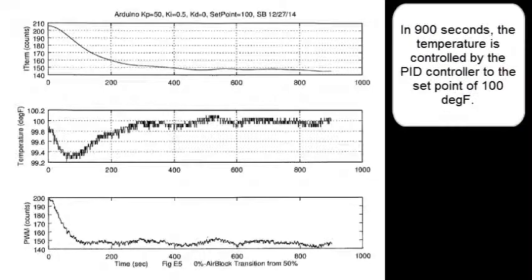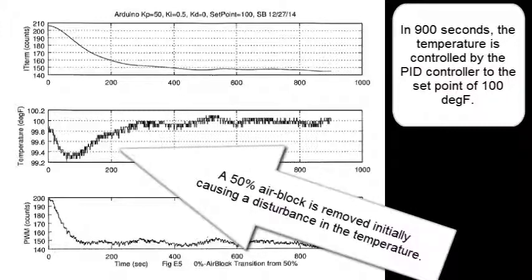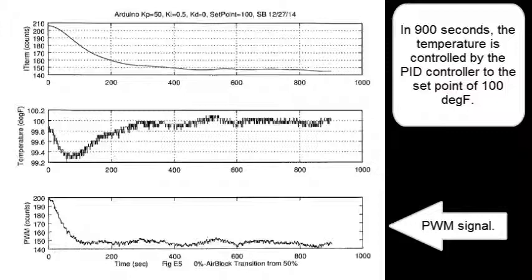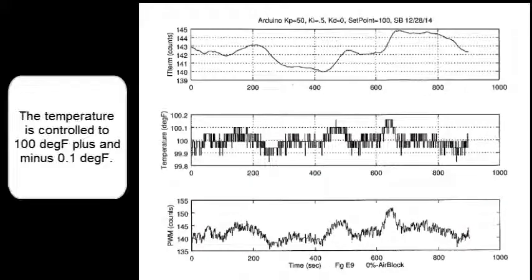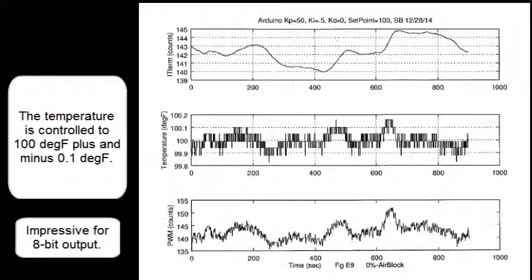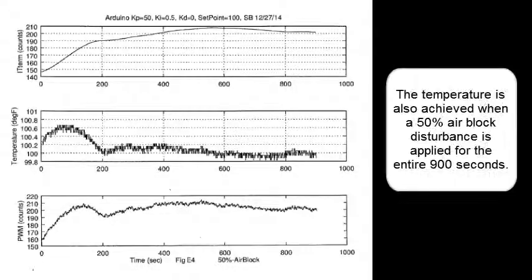In 900 seconds, the temperature is controlled by the PID controller to the set point of 100 degrees. A 50% air block is removed initially, causing the disturbance in temperature. There is the pulse width modulation signal and the integrator output. The temperature is controlled to 100 degrees Fahrenheit plus or minus 0.1 for an entire 900 seconds. That's impressive for an 8-bit output. The temperature is also achieved when a 50% air block disturbance is applied for the entire 900 seconds.